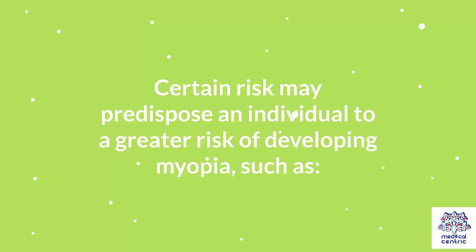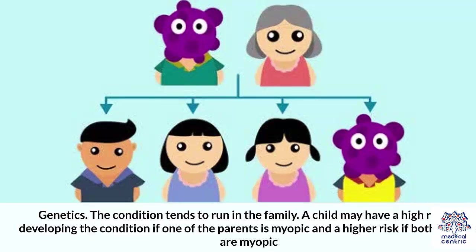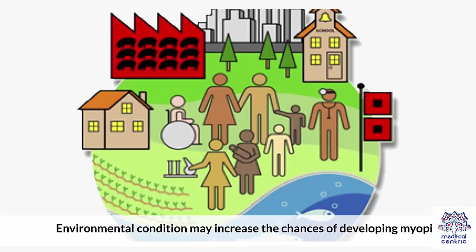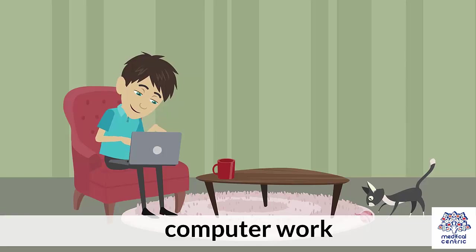Certain factors may predispose an individual to a greater risk of developing myopia, such as genetics. The condition tends to run in the family. A child may have a high risk of developing the condition if one of the parents is myopic, and a higher risk if both parents are myopic. Environmental conditions may also increase the chances, including doing a lot of reading, writing, or computer work.